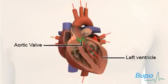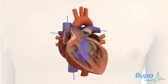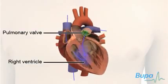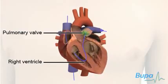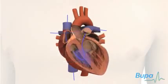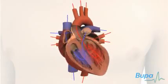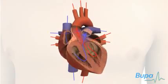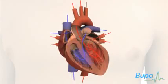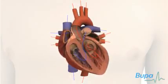The valve at the exit of the left ventricle, the aortic valve, stops blood passing back into the ventricle. The pulmonary valve at the exit of the right ventricle also stops blood flowing backwards. This flow of blood doesn't happen automatically.